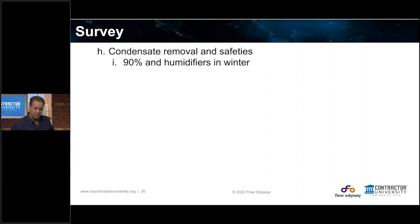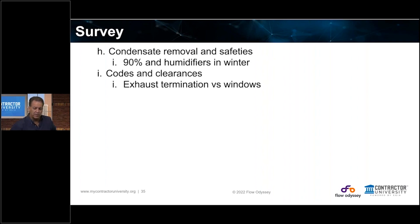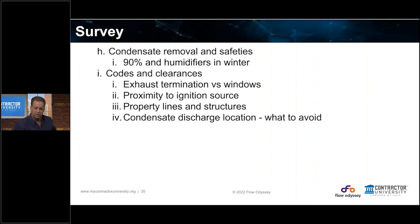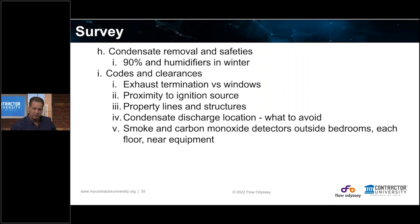Remember, we talked about 90-percenters and humidifiers in the winter — how are you going to drain those out so what you're expelling isn't freezing? You've got to make sure you're hitting all the codes and clearances. Where are you exhausting the termination of your 90-percenter? You have to be wary about window proximity, ignition sources, gas lines, and gas valves outside as well. Property lines and structures that require clearance. Condensate discharge location — you don't want to dump acidic water onto a sidewalk or patio. I've seen companies that had to buy whole new stamped concrete patios because of acidic condensate discharge.